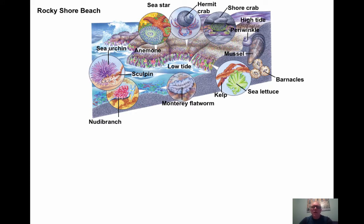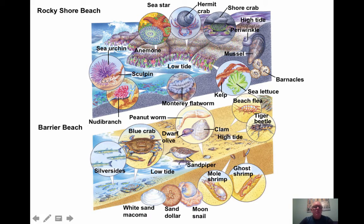Here are some of the animals adapted to living where the tide comes in, and they have to also be adapted to the people who are going to be there, because people like to spend a lot of time on the shoreline. Here is a rocky beach, and here is a barrier beach. Shores along the Pacific Ocean look very different from the California coast than the coast we have here. Ours look more like the barrier beaches, while they have rocky shore beaches. These species have to be adapted to those changing conditions.